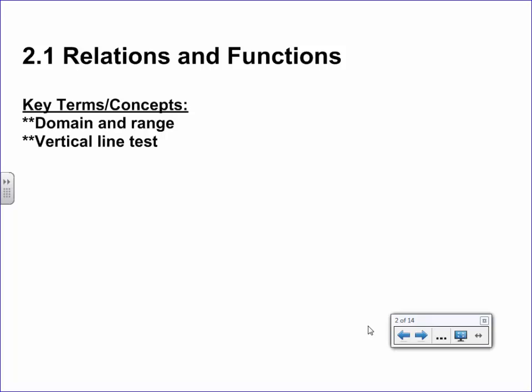Okay, this section is called relations and functions. About everything we'll be looking at will at least be a relation, but we'll also come up with a test to see if something is considered a function. Some of the key terms we're going to talk about: domain and range, which would be pretty straightforward, and the vertical line test will be a method for testing if something is a function.